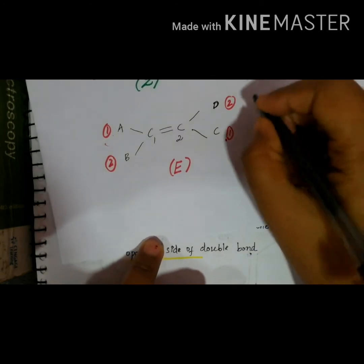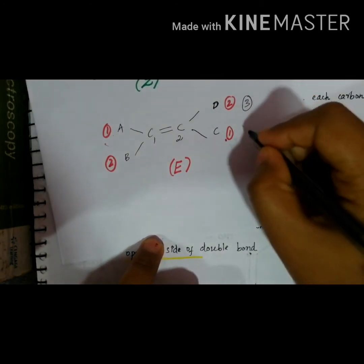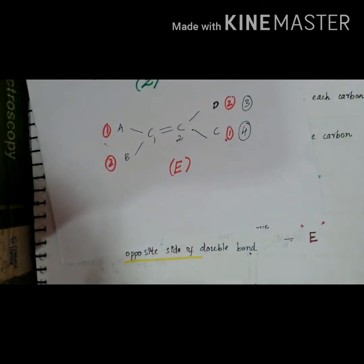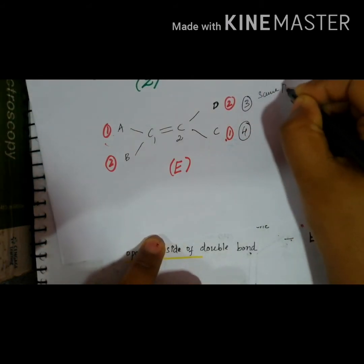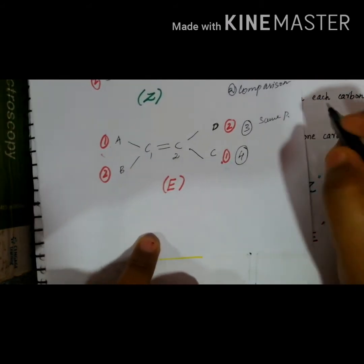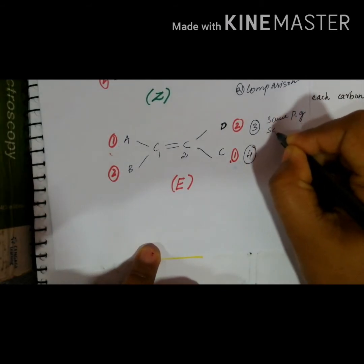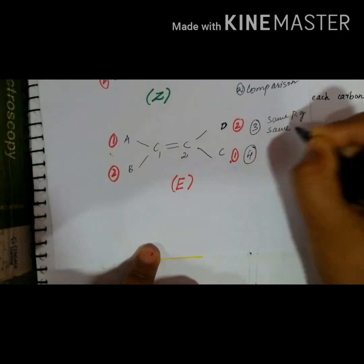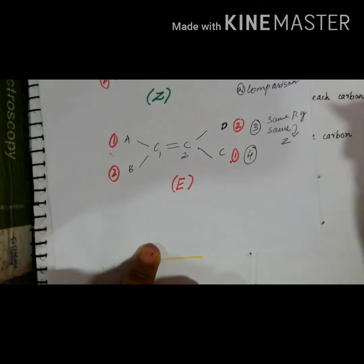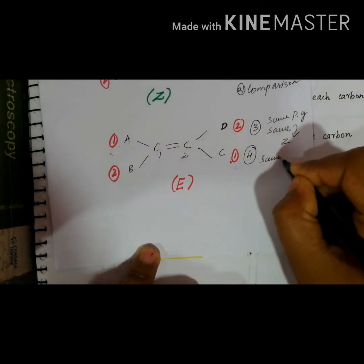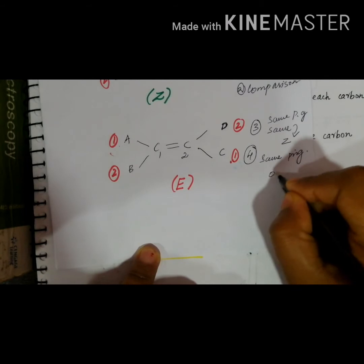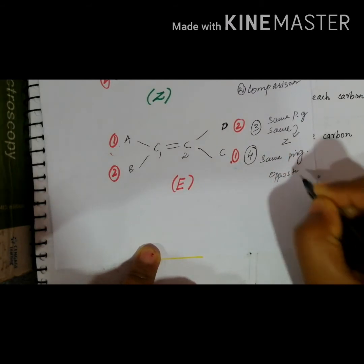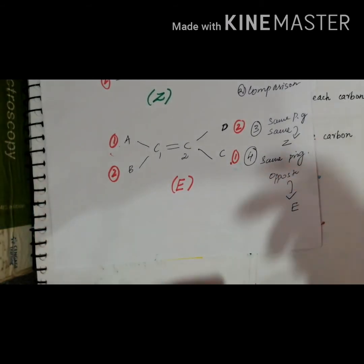So to summarize rules three and four: if same-priority groups (priority 1 and 1) are on the same side of the double bond, it is assigned Z. If the same-priority groups are on opposite sides, it is assigned E. These are the priority-checking rules.